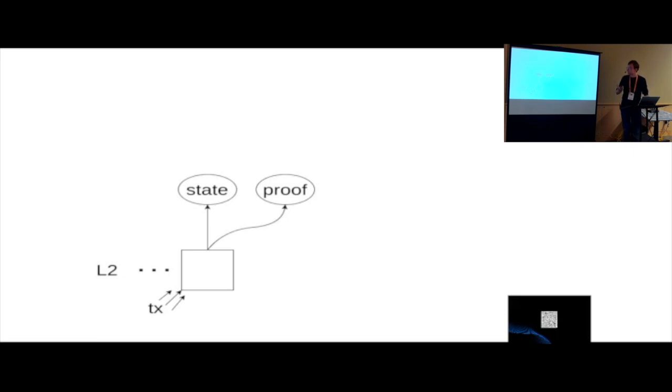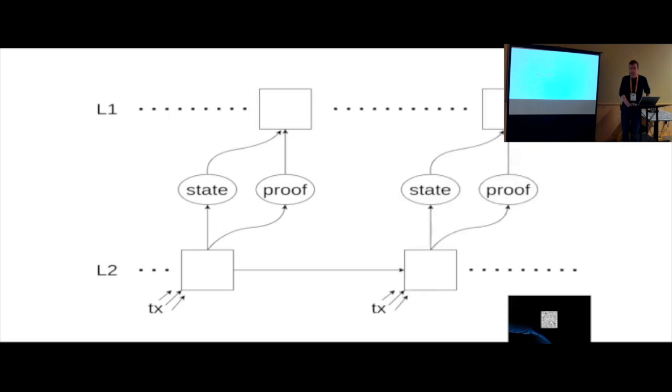So creating this proof requires a lot of time. But verifying the proof doesn't. And it's also logarithmic in size, so it's very small. So we can put this on layer one without DDoSing layer one. And this goes into a layer one block. And then we wait for this block to be verified, confirmed by layer one. And this means that layer one verified that the state transitions are correct. And then we can go on with this process, continue and get new blocks.